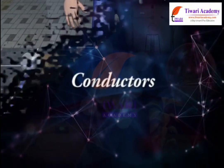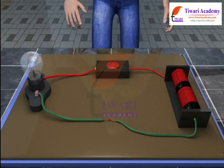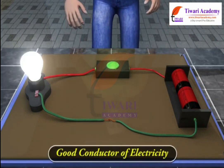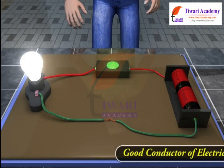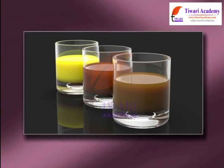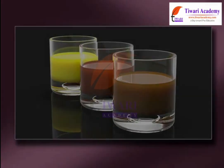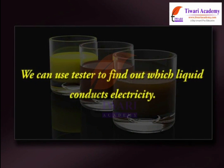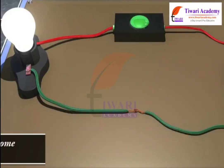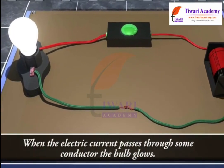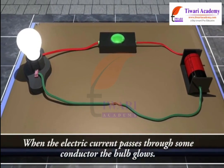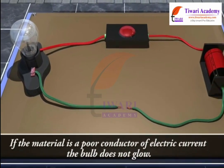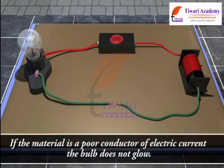Conductors. Many materials allow electric current to pass through them and they are called good conductors of electricity. Liquids also conduct electricity. We can use a tester to find out which liquid conducts electricity. When the electric current passes through some conductor, the bulb glows. If the material is a poor conductor of electric current, the bulb does not glow.